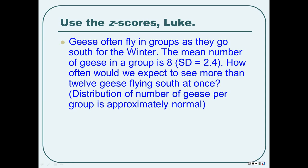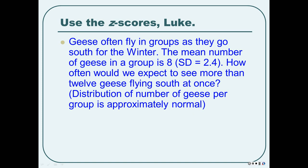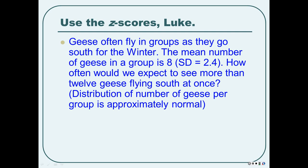These questions don't work if I said to see exactly 12 geese — those don't work for the normal distribution approximation. So how often would we expect to see more than 12 geese flying south at once? I have to mention that the distribution of the number of geese per group is approximately normal. So we can pretend this distribution is a true normal distribution, and we know we'll only be off by a little bit. We're going to use the normal distribution to estimate.